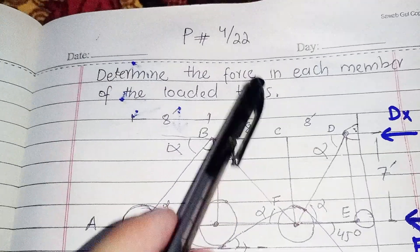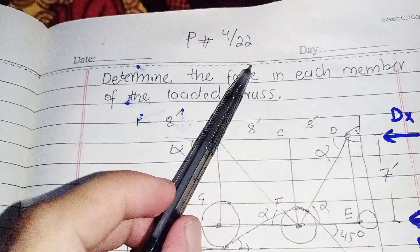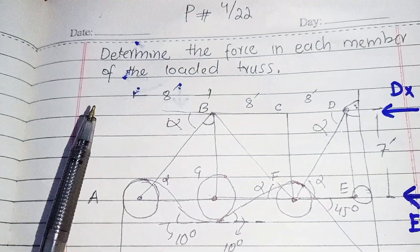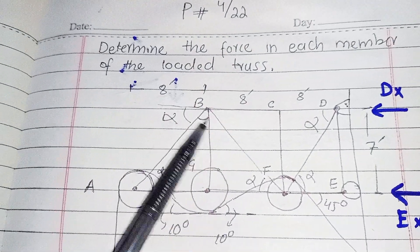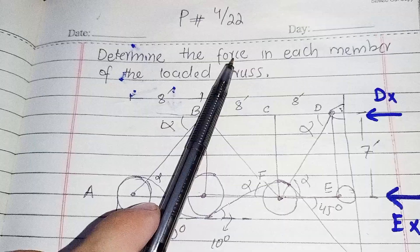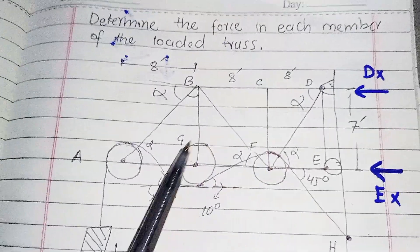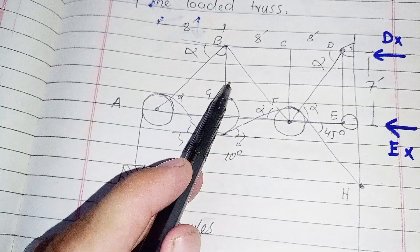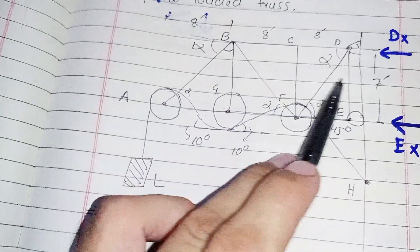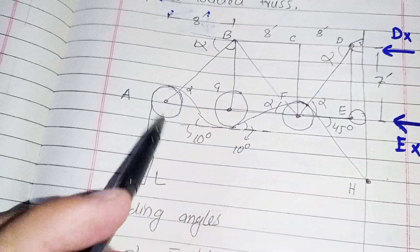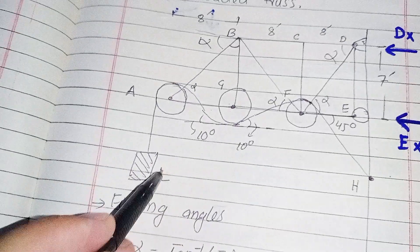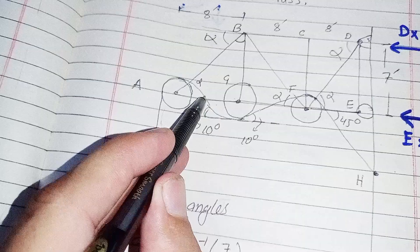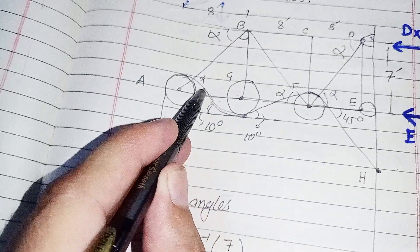Hello dear students, this is Problem 22 of Chapter 4 of Engineering Mechanics Statics, 9th edition. This is a loaded truss in which we will determine the forces in each member. We will determine the force in all members. This is a 10-degree tension cable which exerts a tension force by which this load is supported.